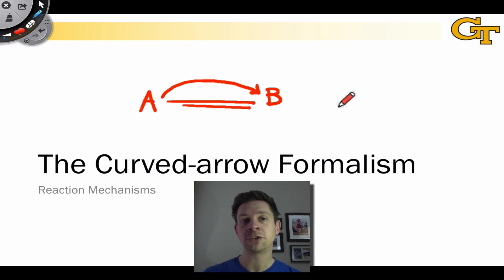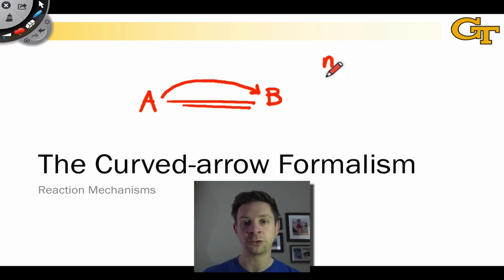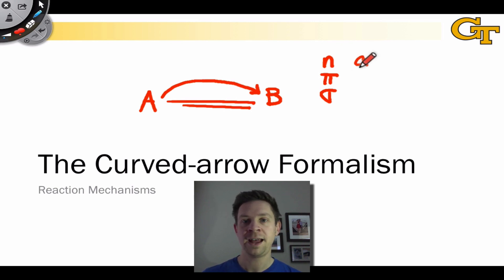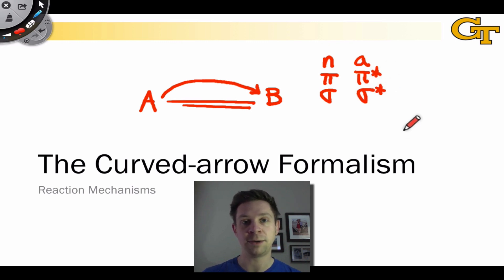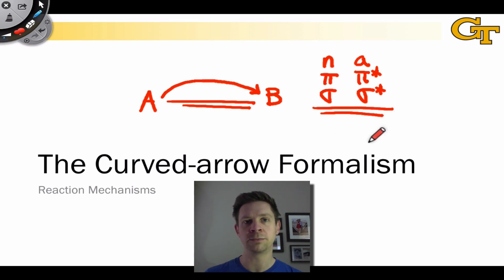But there's an underlying structure to the curved arrow formalism as well, based on localized molecular orbitals: n, pi, sigma, and the antibonding counterparts — the empty atomic orbital, pi star for a pi antibond, and sigma star for a sigma antibond. Tapping into these localized molecular orbital descriptions is important for understanding organic reactivity on a deep level.